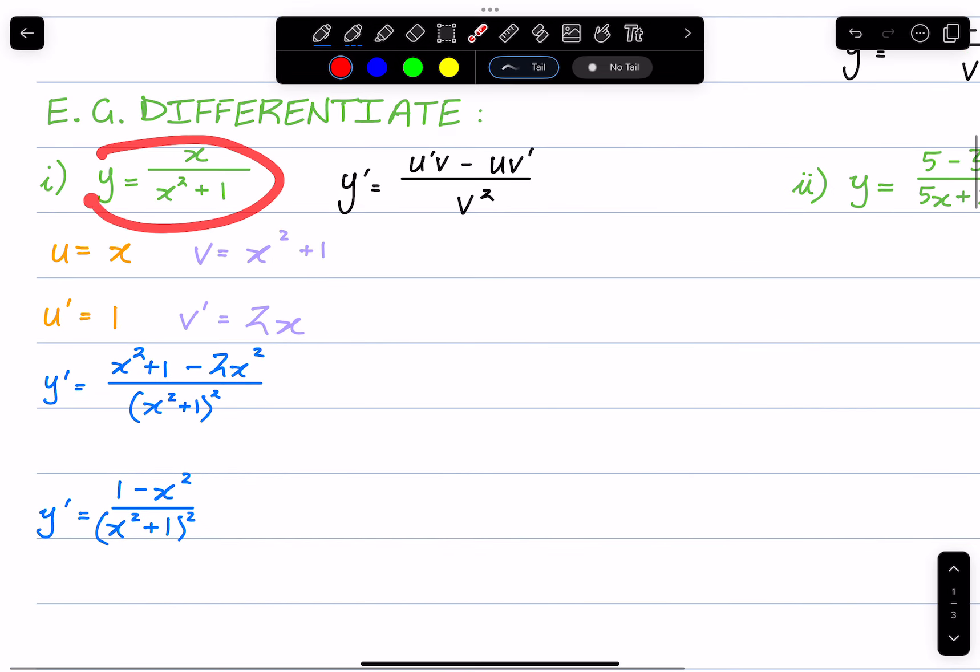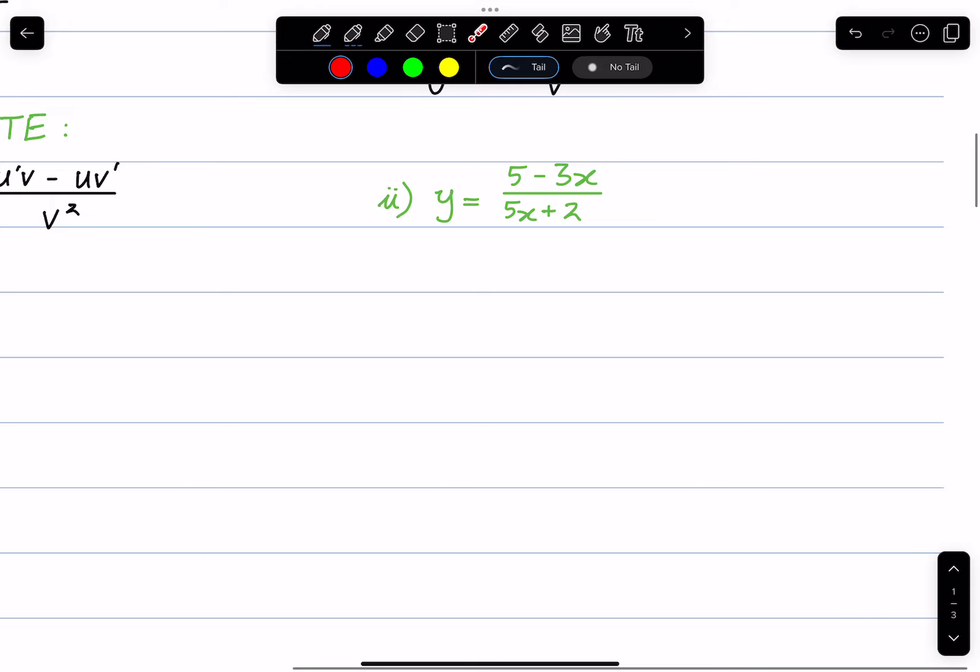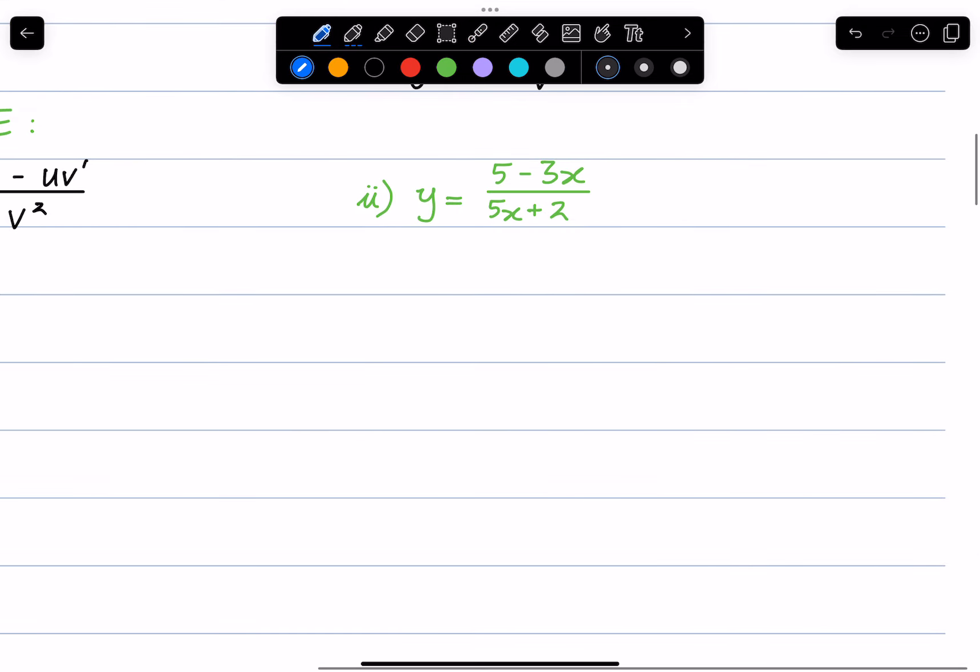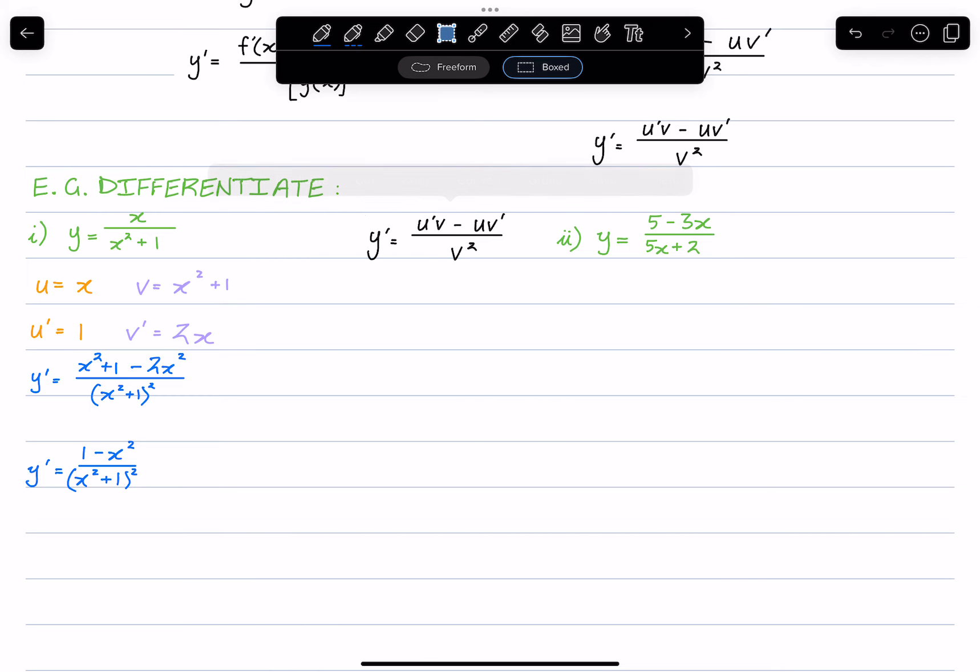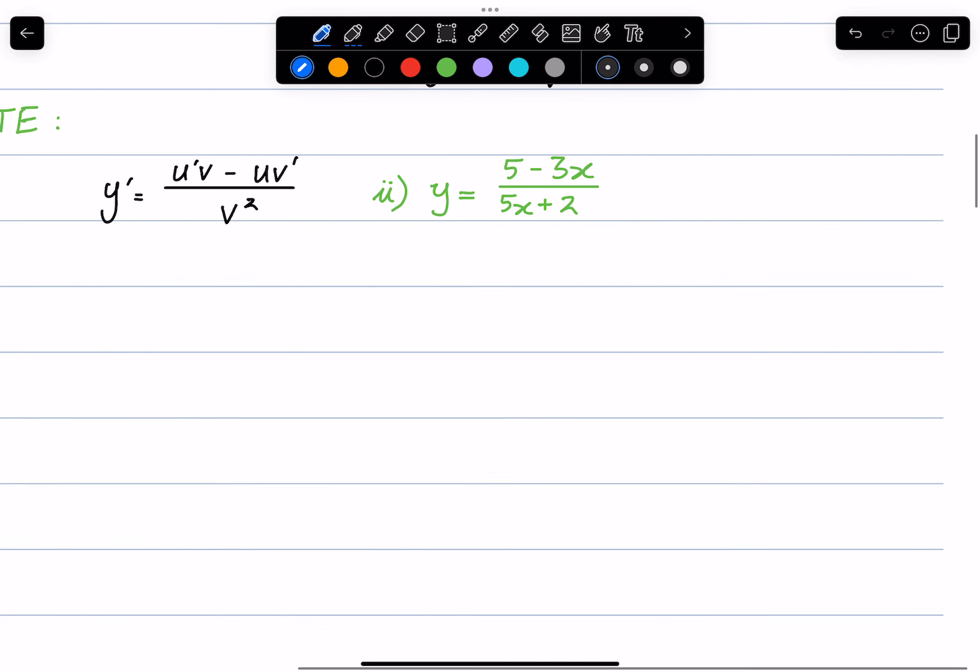Okay, so starting off nice and simple. Let's keep going for the next expression. Once again, notice we have two functions, one in the numerator and one in the denominator. We identify what u and v are: u equals 5 - 3x.